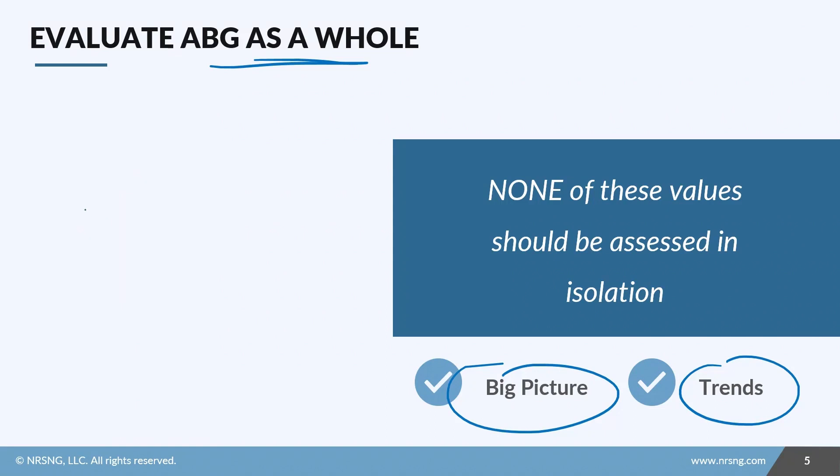You can also take values obtained from your blood gas and compare them to other clinical findings. You can look at things like the anion gap or the PF ratio. All of these things are going to help you see the big picture and really evaluate whether these individual values are good or bad for your specific patient.